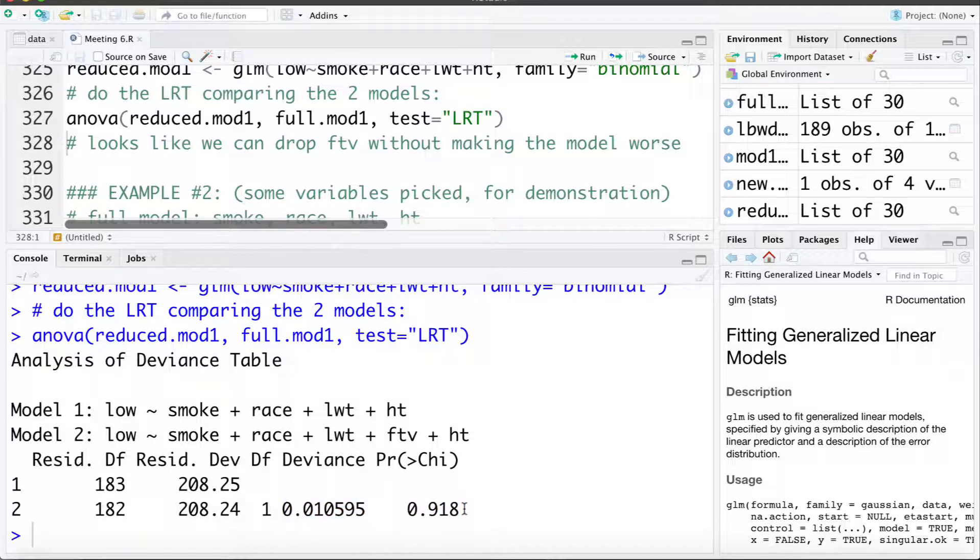With a large p-value we're going to fail to reject our null. We don't have any evidence that the full model is better than the reduced. So here we conclude that we can drop FTV from our model without making the model worse or without losing predictive power.